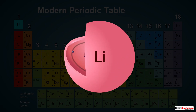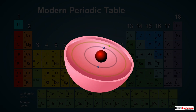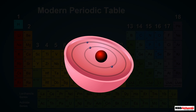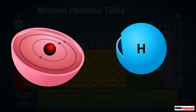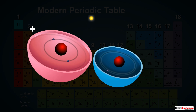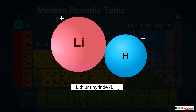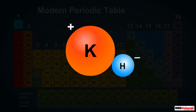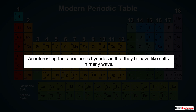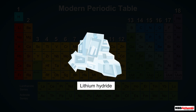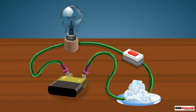In the case of group 1 elements like lithium, an atom has only one electron in its outermost shell. A lithium atom combines with one hydrogen atom by losing one of its outermost electrons, resulting in the formation of lithium hydride with the formula LiH. Another example is potassium hydride, KH. An interesting fact about ionic hydrides is that they behave like salts — for example, they are crystalline solids that do not conduct electricity in solid or powdered state.